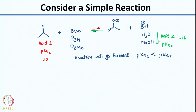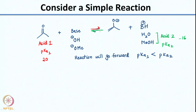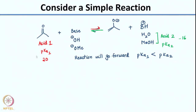If acetone is a better acid, the reaction will go forward toward formation of enolate. If you use hydroxide, the conjugate acid is water; if you use methoxide, the conjugate acid is methanol. If the conjugate acid of the base is a better acid, the reaction will go toward the left and you will not get much enolate. So it is important to consider relative acidities. If pKa of acid 1 is lower than pKa of acid 2, the reaction will go forward.